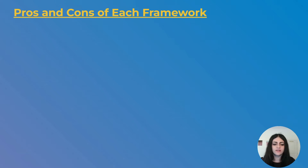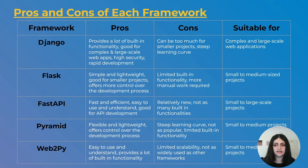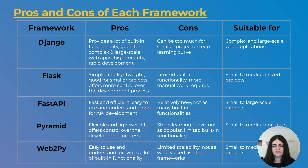To summarize everything, here's a table of pros, cons, and suitable application sizes for each framework. Django's pros: lots of built-in functionality, good for complex and large-scale apps, high security, and rapid development. Cons: can be too much for smaller projects and has a steep learning curve for beginners. Flask's pros: simple, lightweight, good for small projects, more control over development, doesn't force a specific style. Cons: limited built-in functionality and more manual work required. FastAPI's pros: fast, efficient, easy to use, great for API development. Cons: relatively new and fewer built-in functionalities.